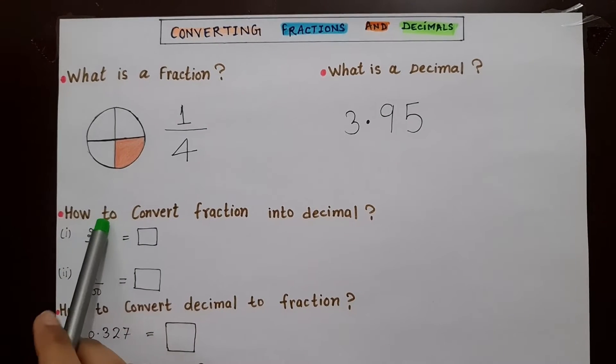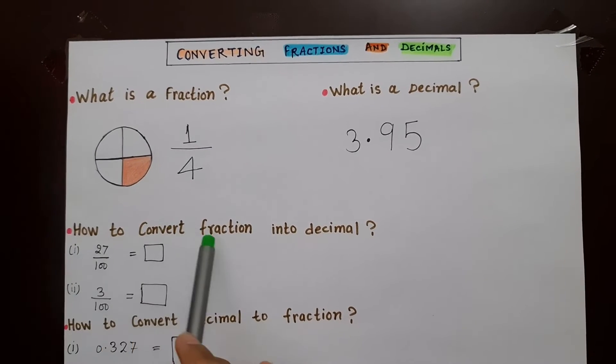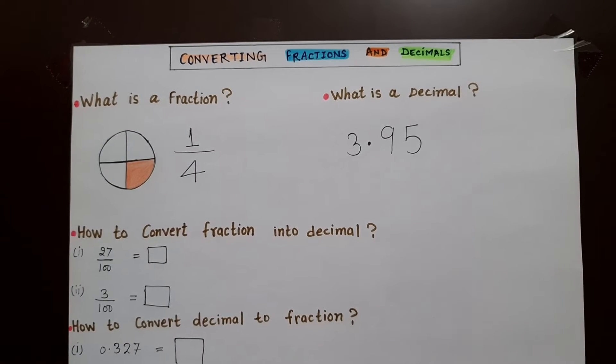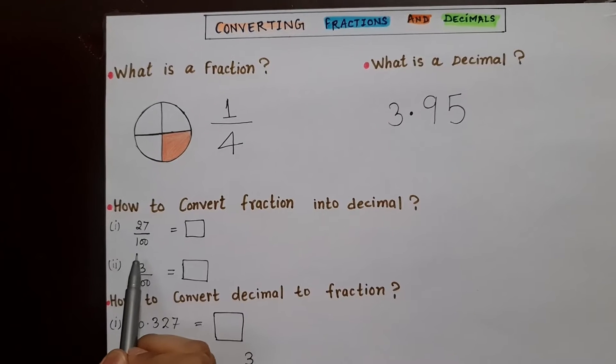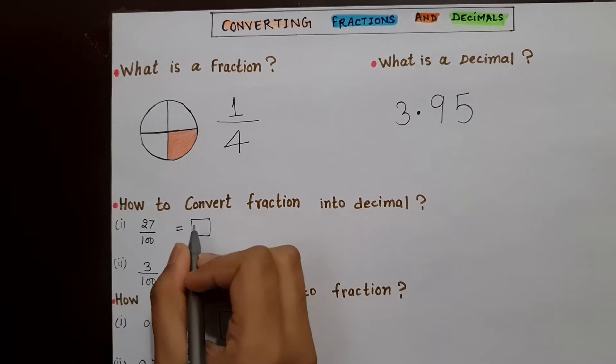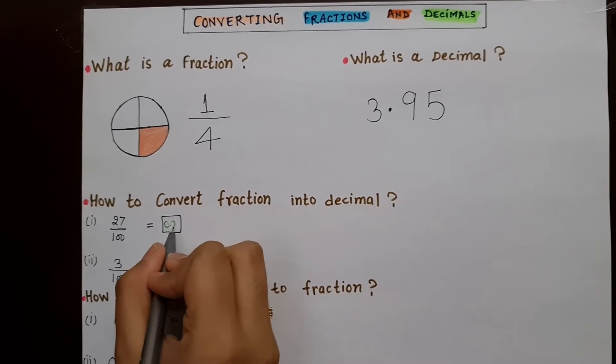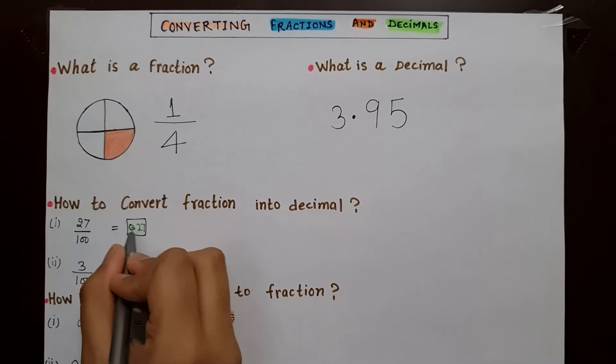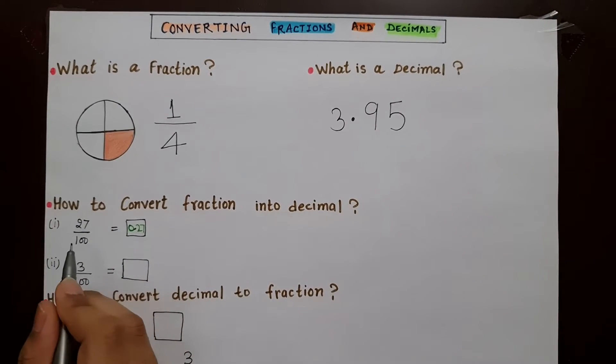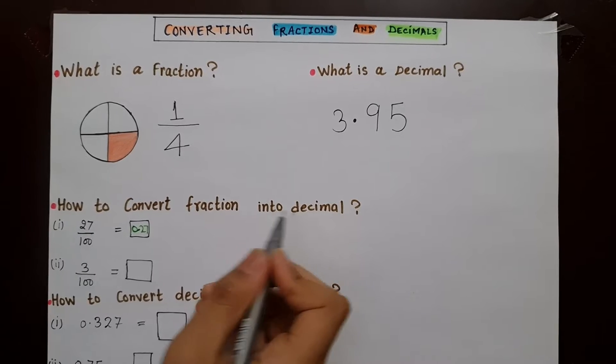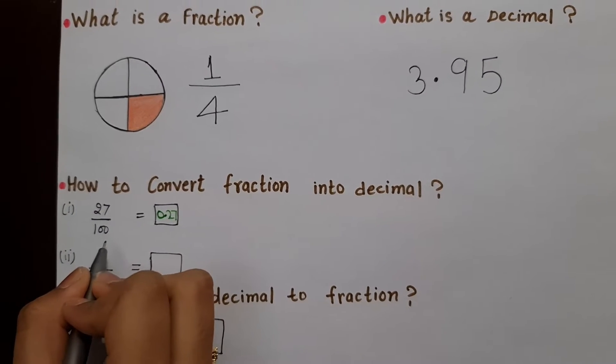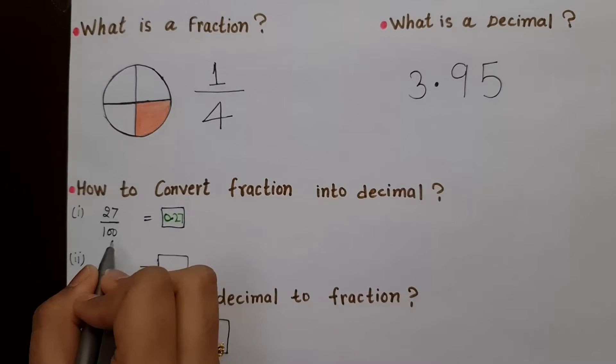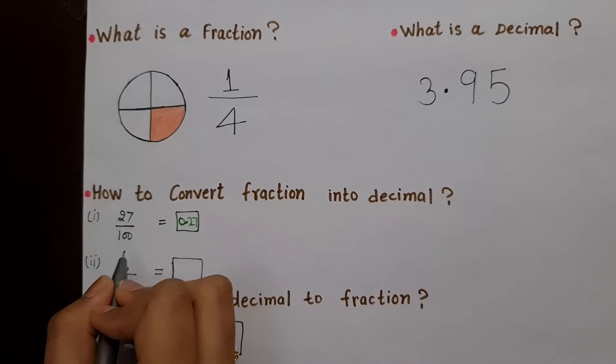Now let us come to the conversion side. How to convert fractions into decimals? So as you can see here, 27 by 100, when we convert it, it will give us 0.27. How you ask? So whenever we convert fractions into decimals, we always have the basis of 10 numbers: 10, 100, 1000. I have a video on this. The link will be given in the i button.